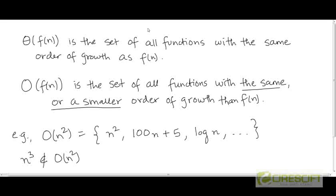We saw in a previous video that θ is really the set of all functions with the same order of growth as f. We can define O in an analogous way. O is the set of all functions with the same or a smaller order of growth than f. So any function that is a part of this set O is either going to have the same order of growth as f or a smaller order of growth than f.